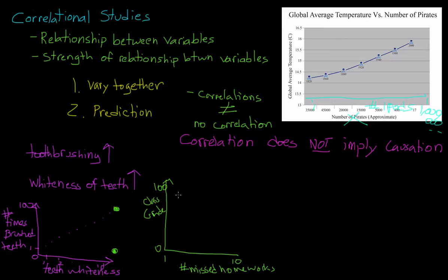And in this case, we might see something like this. We might see the data points are moving down. And what this data would mean is that here someone missed one homework and they had a pretty high score. Here someone missed two homeworks, and they didn't get as good of a grade. And as you see, as the number of missed homeworks increases, we're seeing that the grade in the class decreases. And that's what we mean by negative correlation.